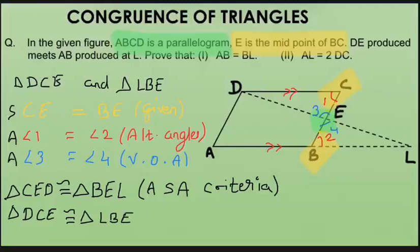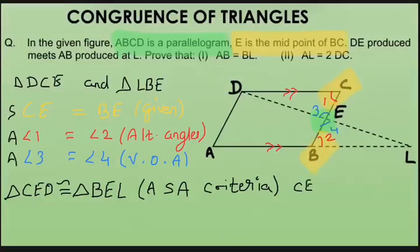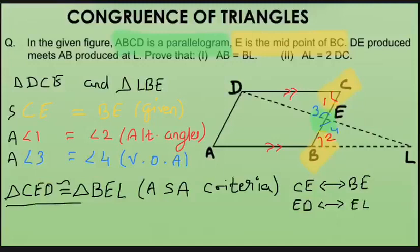Once we have two congruent triangles written with the correct sequence, we can find all their corresponding parts. Side CE corresponds to side BE, side ED corresponds to side EL, and angle D in the first triangle corresponds to angle L in the second triangle.